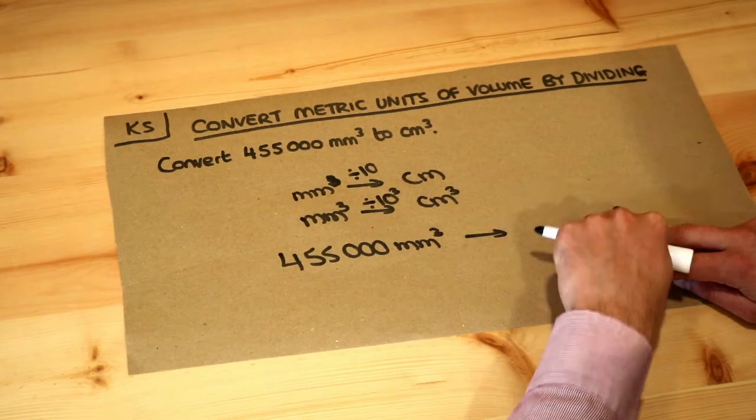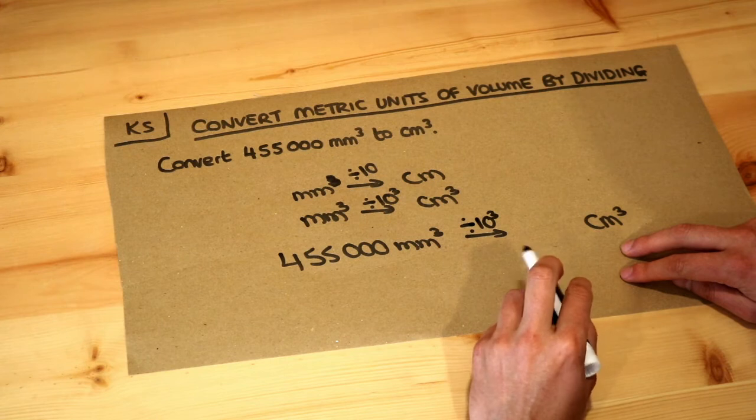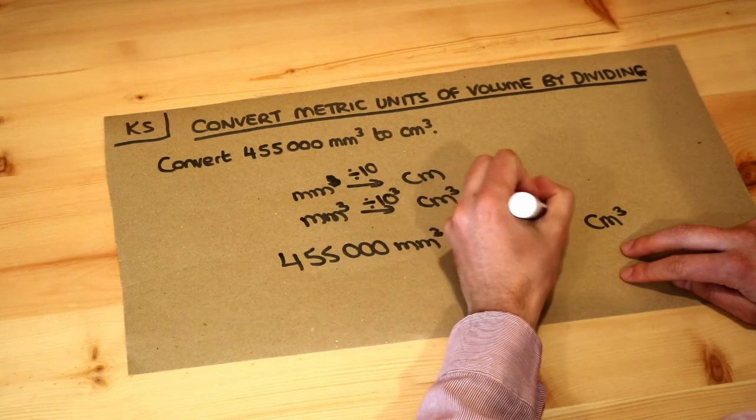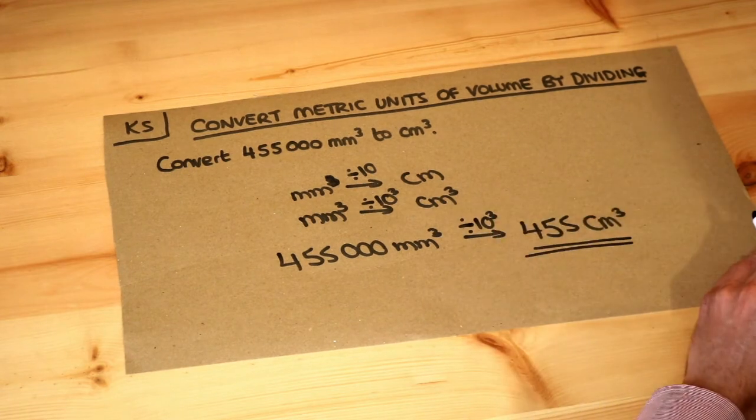So millimeters cubed to centimeters cubed, you divide by 10 cubed, and that gets rid of three of the zeros - one, two, three. We're left with 455 centimeters cubed, and that's the final answer.